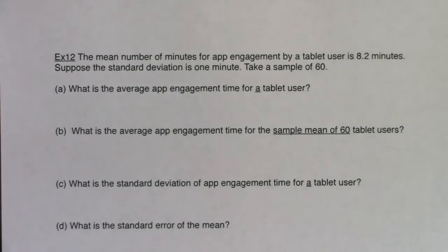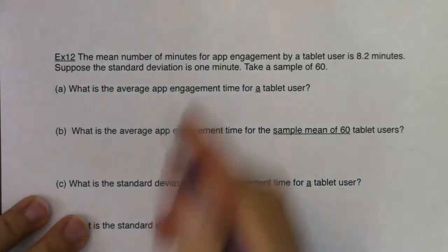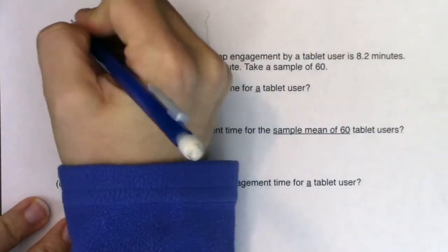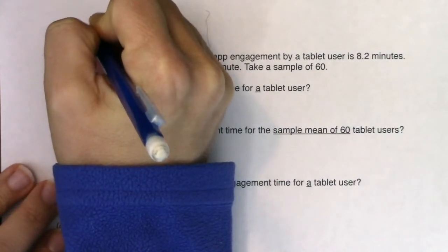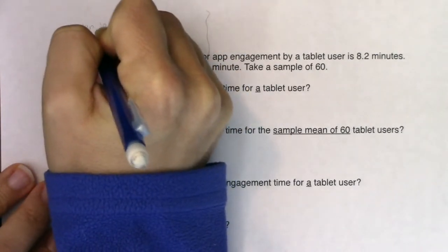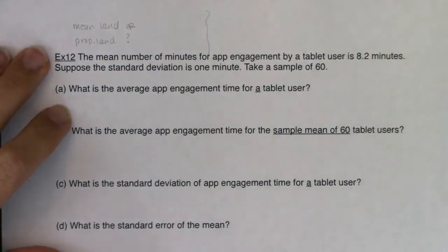All right, let's start taking a look at a couple of word problems. When it comes to word problems in chapter seven — and really for chapters seven, eight, nine, and ten — there's an initial question you want to ask yourself, and there are two ways to go about it. The first question you can ask is: are you in mean land or proportion land?